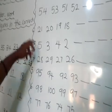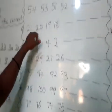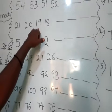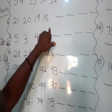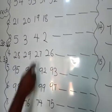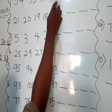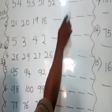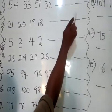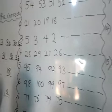Number 2: we have 21, 20, 19, and 18. Which number comes first? We have 18 as our first number. 18, followed by 19, then 20, and 21.